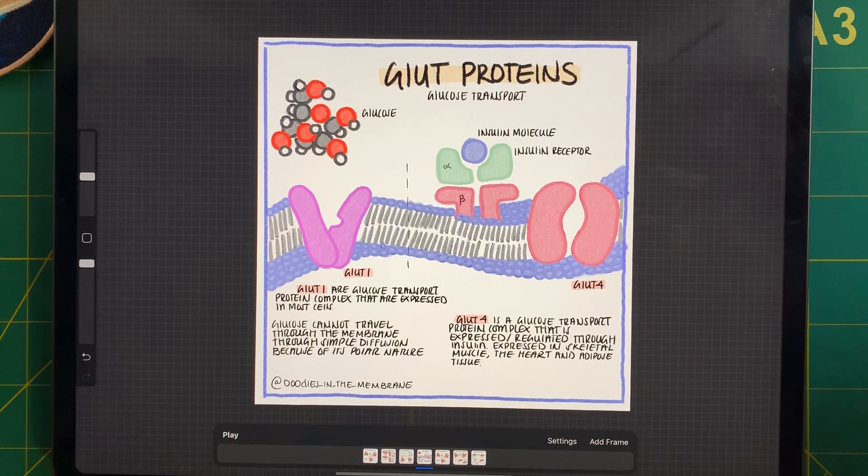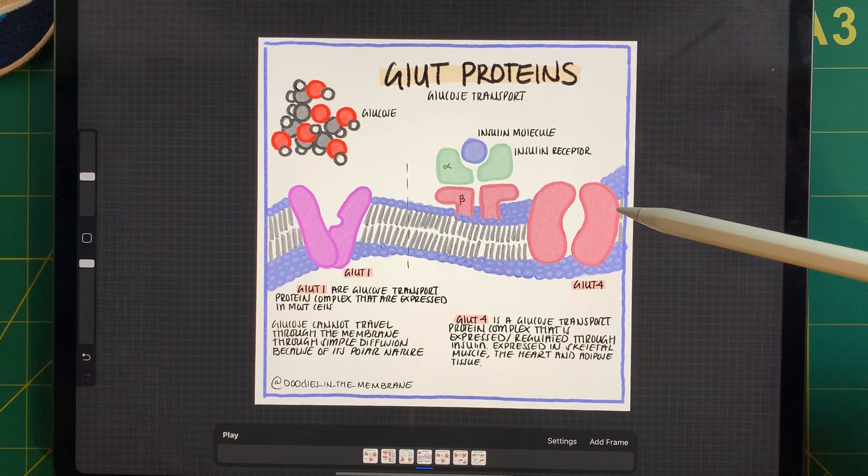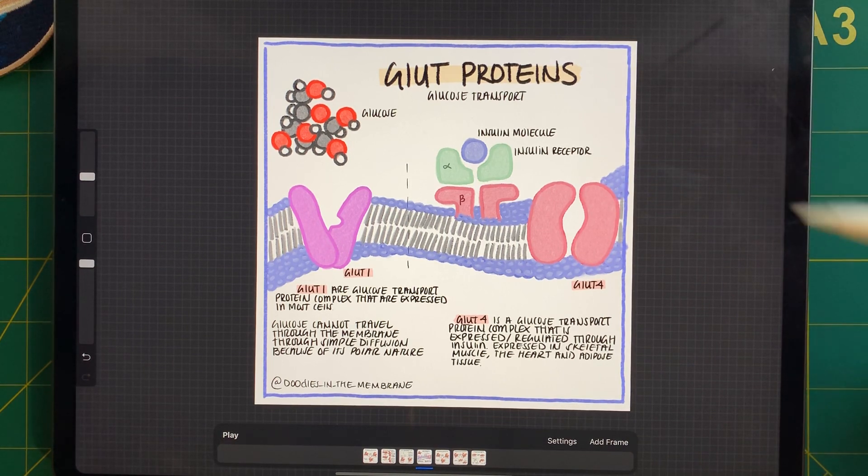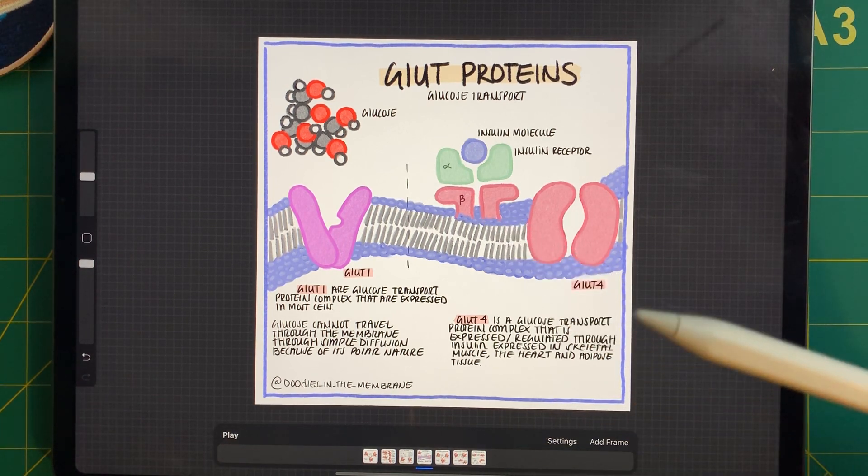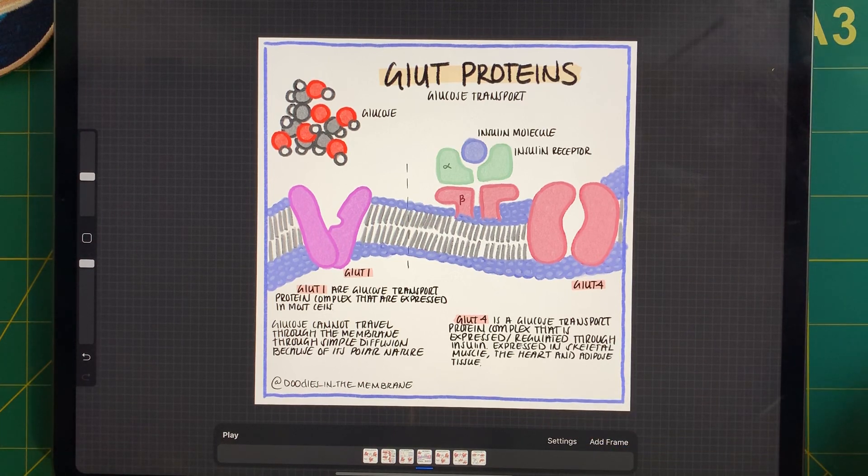Now, we're going to be talking about how insulin affects glycolysis and cellular respiration and how the alternate hormone, glucagon, affects gluconeogenesis and glycogen. But we're going to be talking about that in a later video. But GLUT4 protein complexes are normally just expressed in skeletal muscle, the heart and adipose tissue. Okay, so now we've officially found out how glucose goes inside the cell. So let's start breaking down glycolysis.